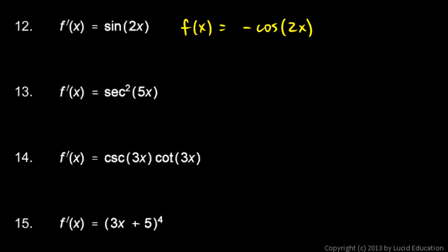So, to get rid of that times 2, we need to divide by 2. And then, of course, we need to put a plus c. And if you wanted to write it as negative 1 half cosine 2x, obviously that's equivalent. And that would be fine to write it that way as well.